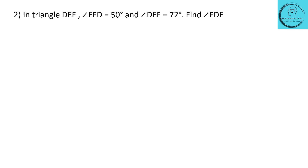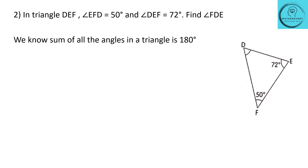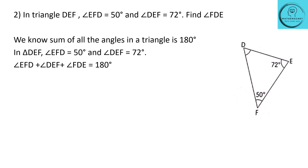Question 2: in triangle DEF, angle EFD equals 50 degrees and angle DEF equals 72 degrees. Find angle FDE. We know that the sum of all angles in a triangle is 180 degrees. So angle EFD plus angle DEF plus angle FDE equals 180 degrees. The unknown angle FDE equals 180 minus 50 minus 72 degrees, which gives us 58 degrees. So the unknown angle FDE is equal to 58 degrees.